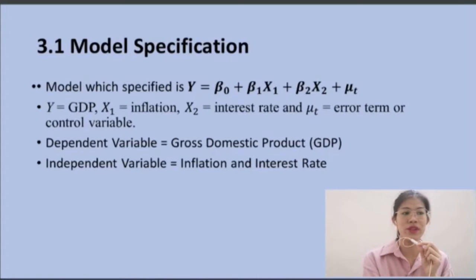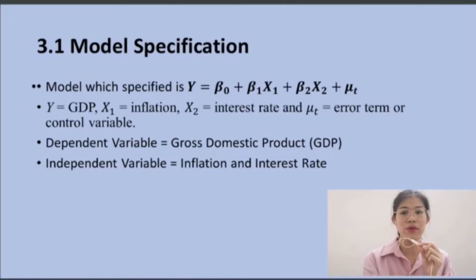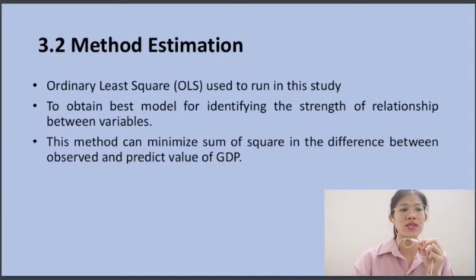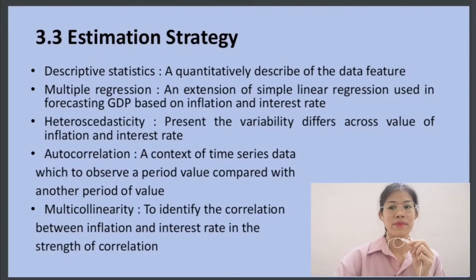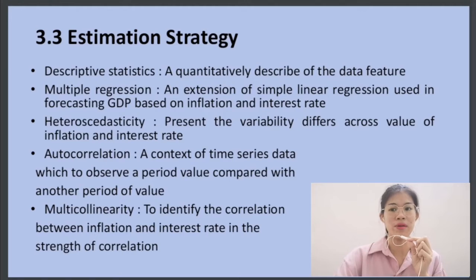VKash Gokal and Marwan Mohamad Abu Arabi, 2016, also stated that the value of inflation and interest rates have a negative relationship between the rate of inflation. In this study, the dependent variable is gross domestic product (GDP) and independent variables are inflation and interest rate. The method of estimation, Ordinary Least Squares (OLS), is used to run in this study to obtain the best model for identifying the strength of relationship between variables. Estimation strategy includes descriptive statistics, multiple regression, heteroskedasticity, autocorrelation, and multicollinearity.